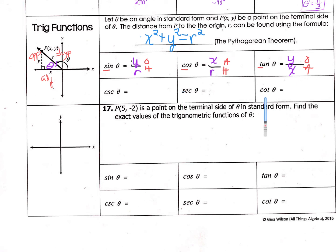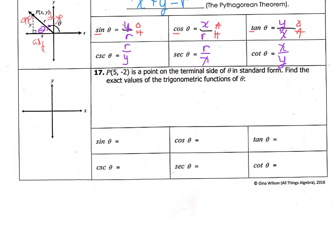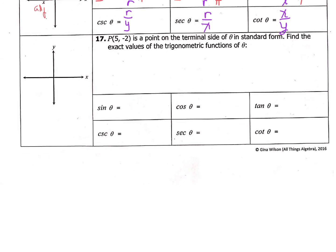So all we have to do is take the reciprocals of each of these. You'd have r over y for cosecant, r over x for secant, and x over y for cotangent. In number 17, they're going to give you an ordered pair — this is an x, y value. You're going to plot that ordered pair on the coordinate grid, and it's going to be a point on the terminal side in standard form. We're going to find the exact values for these trig functions using that exact point.